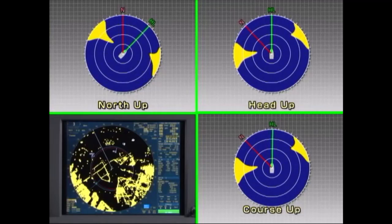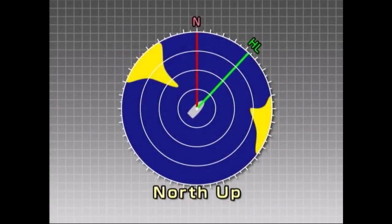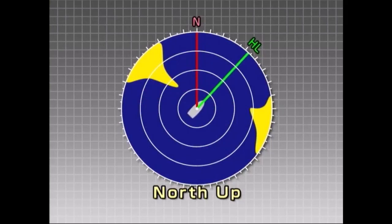Select one of the available azimuth modes to display the radar image you desire. The north-up display positions north at the top of the screen. Note that in this mode, fixed targets do not move, making it easy to compare the display with charts of the area and read the true azimuth of a distant target at a glance.